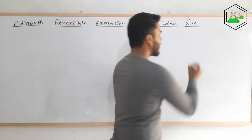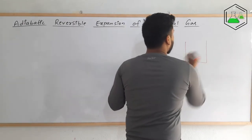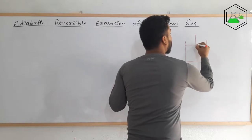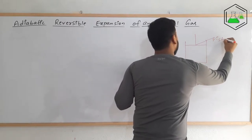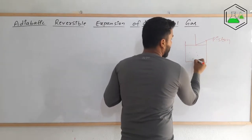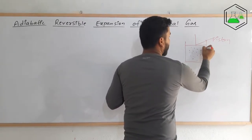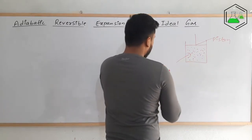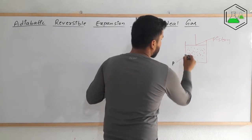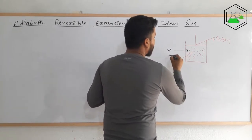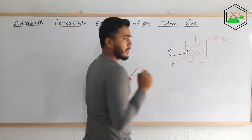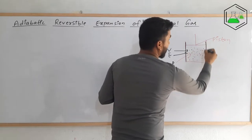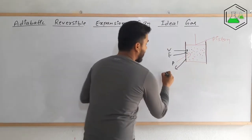Let us consider some ideal gas kept in a cylinder having a weightless and frictionless piston. The ideal gas is kept in it. The pressure of this ideal gas is p, the volume is v, and the internal energy is e.